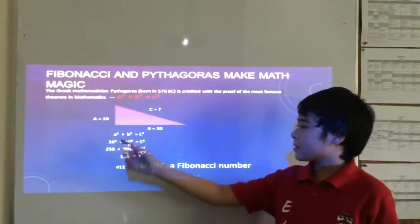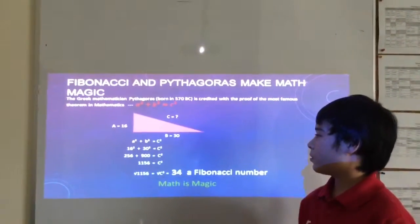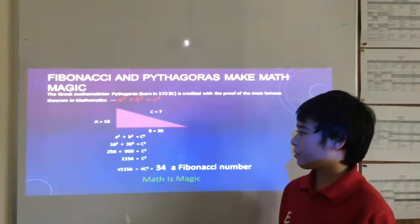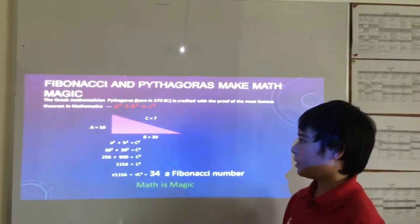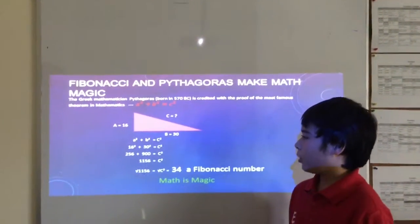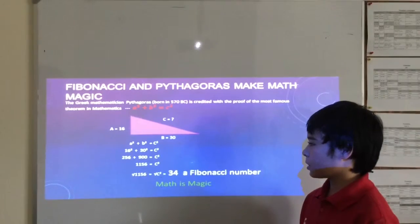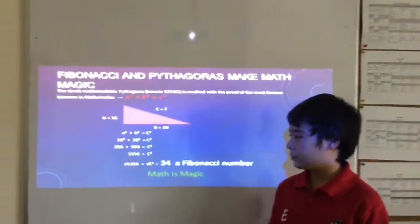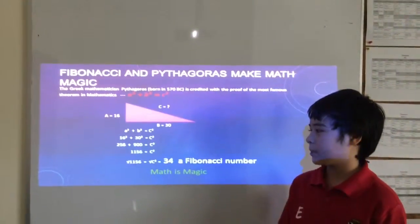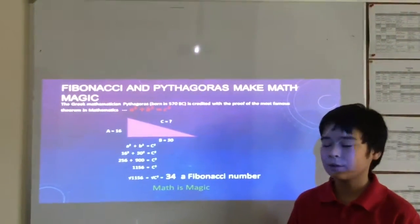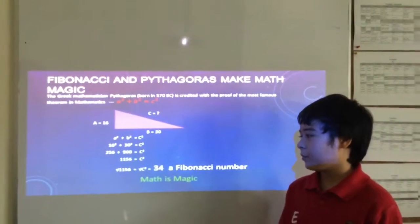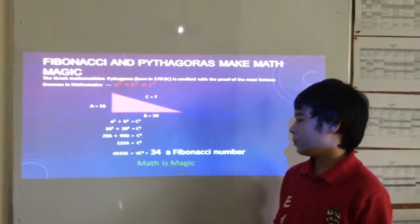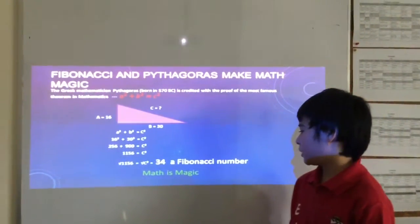So, 16 and 30. 30 is side B and 16 is side A. A squared plus B squared equals side C. 16 squared is 256 and 30 squared is 900. And then you have to add them together. It's equal to 1156. And then you have to find the square root of 1156 and you get 34. 34 is a Fibonacci number.